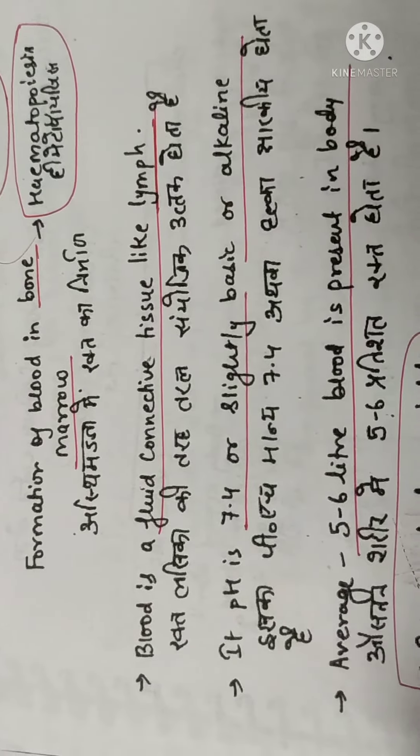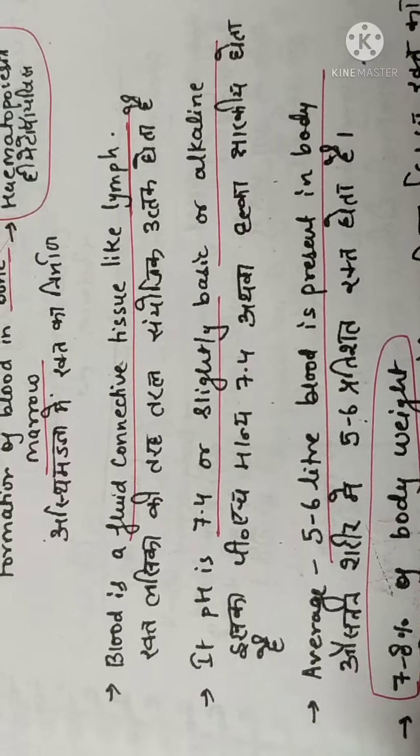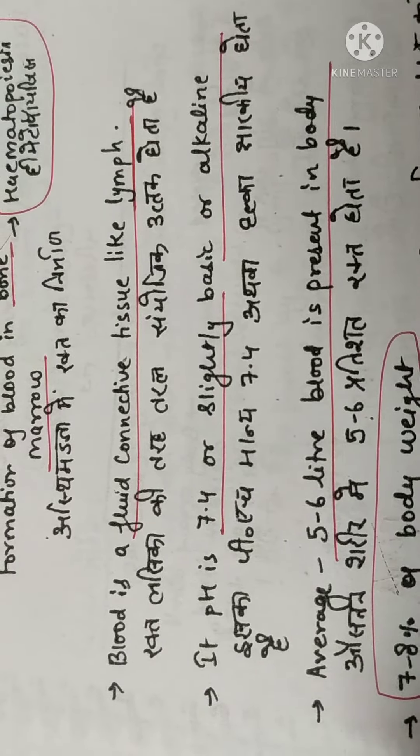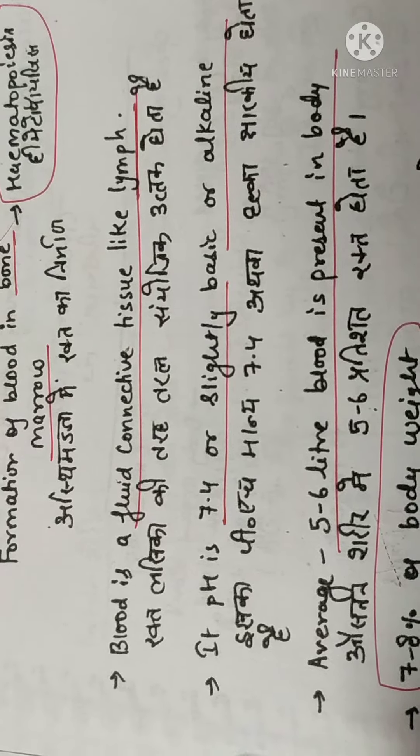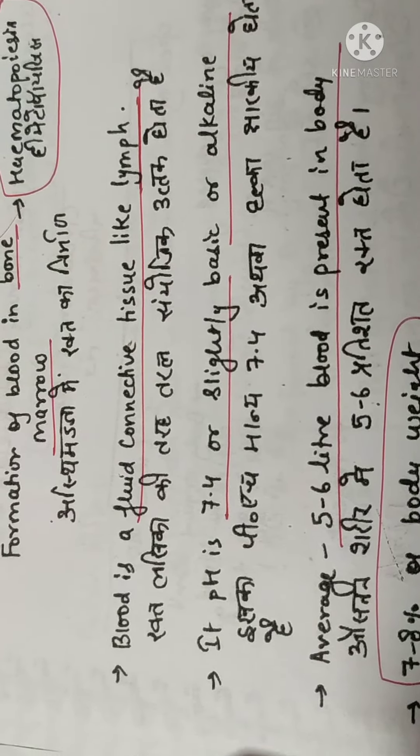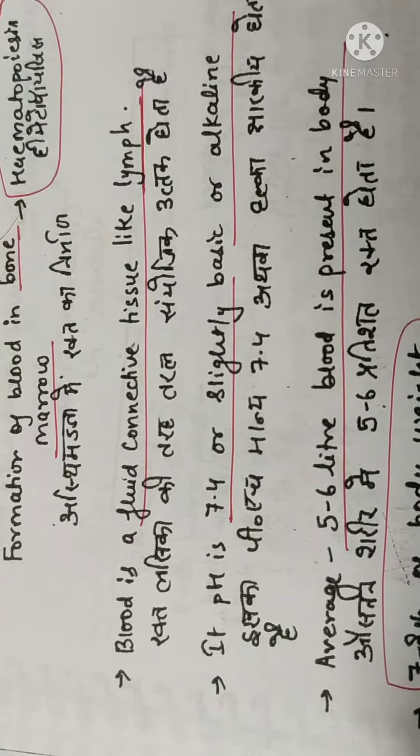Let's discuss the next part. Blood is a fluid connective tissue, like lymph. It is very slimy—when you touch it, it feels sticky—and is a semi-liquid kind of matter.